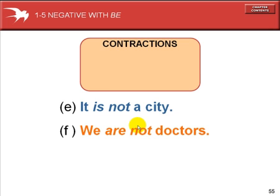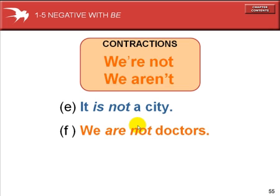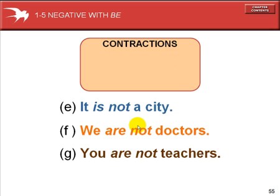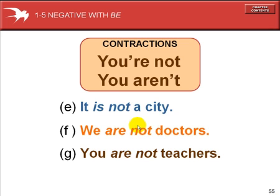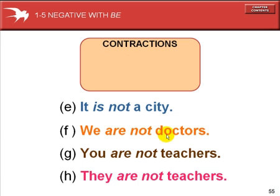We are not doctors. We're not doctors. We aren't doctors. You are not teachers. You're not teachers. You aren't teachers. In the first example, the apostrophe takes the place of the letter A in are. In the second example, the apostrophe takes the place of the letter O in not.